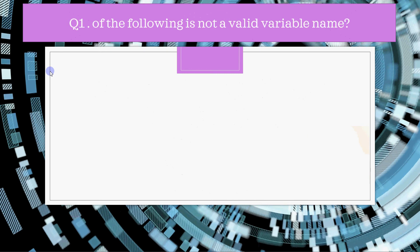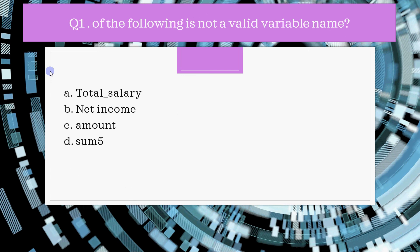The first question is: which of the following is not a valid variable name? You have 4 options. As we know, there are rules for naming variables — the name must satisfy those rules, otherwise it will be invalid. The correct answer is 'net income', because it has a space, and spaces are not allowed in variable names.